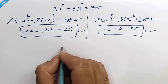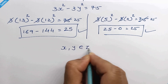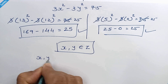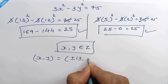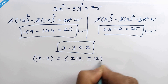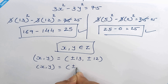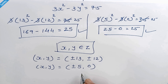Now if we consider x and y belonging to integers, then the answers would be x, y equal to plus or minus 13 and plus or minus 12, and x, y equal to plus or minus 5 and 0. You can try these answers yourself. That's it — thanks for watching, don't forget to subscribe. We will meet in the next one. Bye-bye.